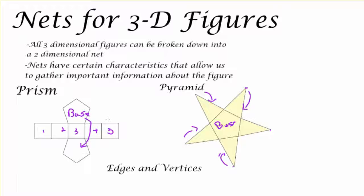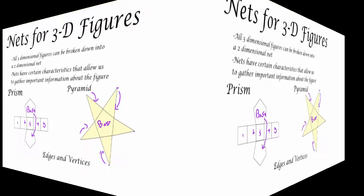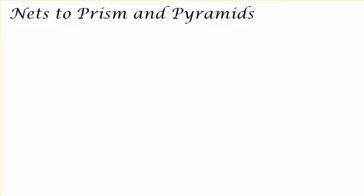In this case in this pentagonal prism I can count the amount of edges, I can count the vertices, and I can count the faces to then make conclusions about exactly what I have.